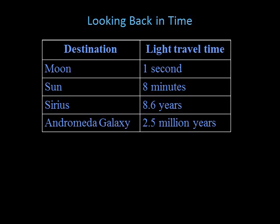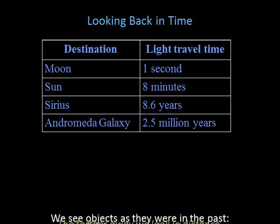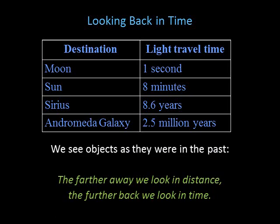Sirius is a nearby star — it takes light 8.6 years to reach us from Sirius. Light from the Andromeda Galaxy spends two and a half million years traveling to reach Earth. This means we see objects as they were in the past, and the farther away we look in distance, the further back we look in time.